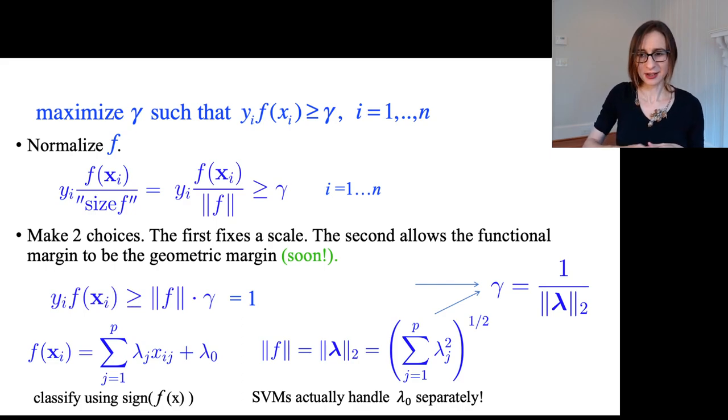I'm going to give you some more geometric intuition, because here I've talked about the functional margin and the geometric margin being different. So the functional margin is y times f. The geometric margin is the actual distance, physical distance or Euclidean distance, between the decision boundary and the nearest point. And I will talk about how those two things are actually equivalent to each other. So I've left a couple of open mysteries. And it will all become much clearer in one dimension.